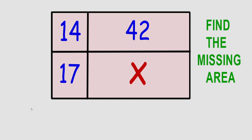So, it's 42 divided by 14 is equal to x divided by 17.